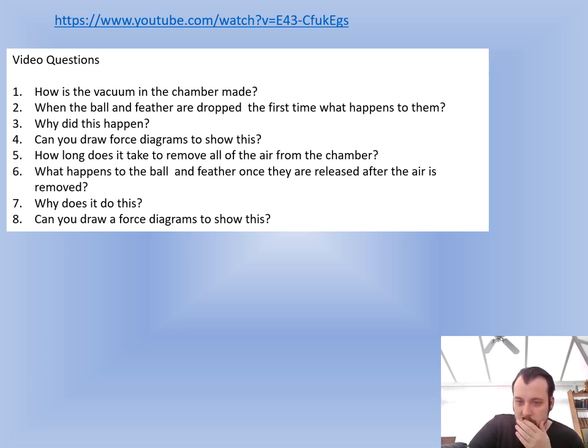Another video in the comment below. So this will be video two. And then I want you to answer these questions. So how is the vacuum made in the chamber? When the ball and feather are dropped for the first time, what happens to them? Why did it happen? Can you draw a force diagram? How long does it take to remove all of the air from the chamber? Very interesting. What happens to the ball and feather once they're released after the air is removed? Why does it do this? And can you draw a force diagram to show that? All of those things are answerable. You can find the answers in the video. Moving on in five, four, better pause it to have a go there. Three, two, one. 18 minute 55 at the moment in case you need the timestamp for coming back.